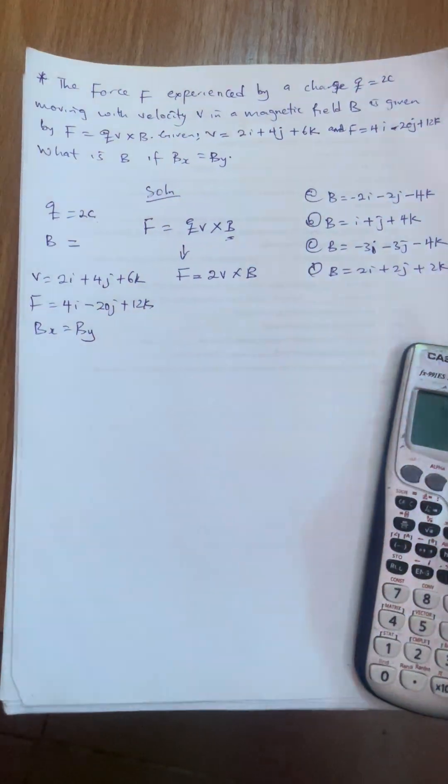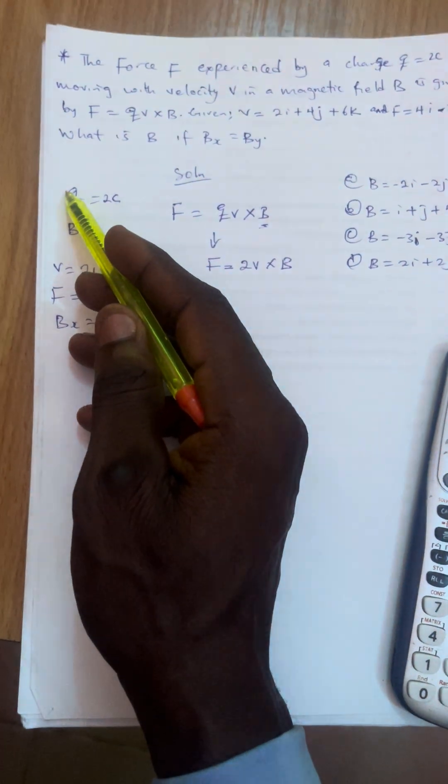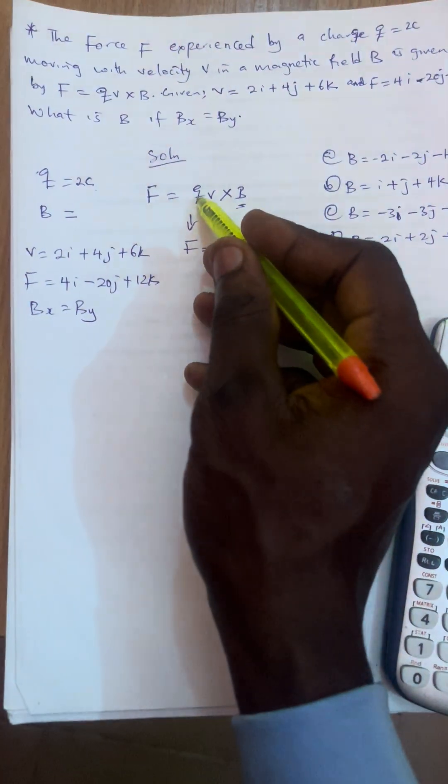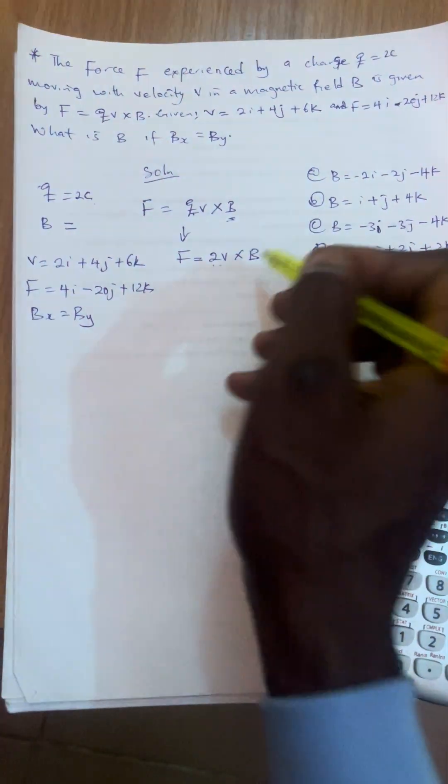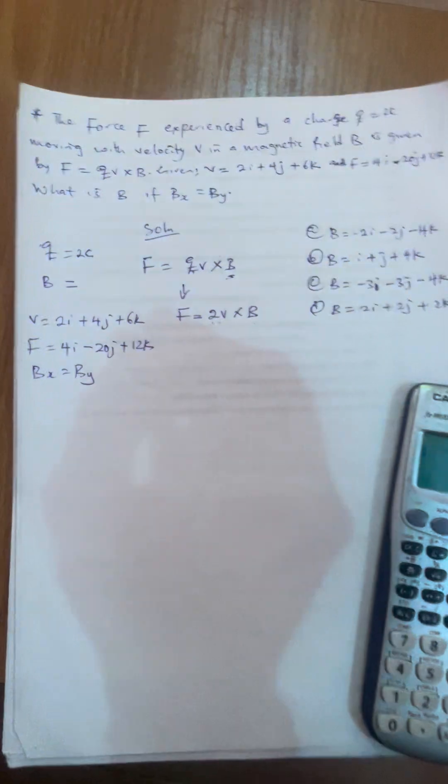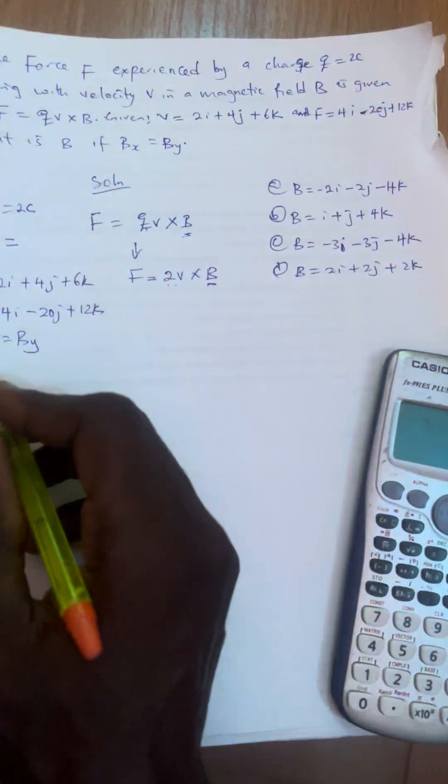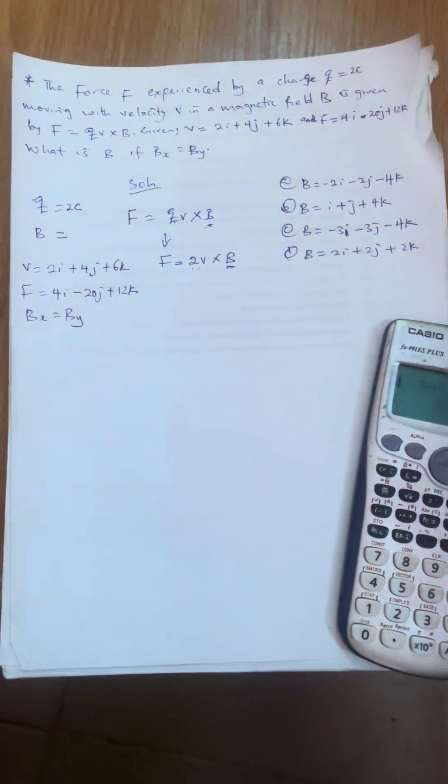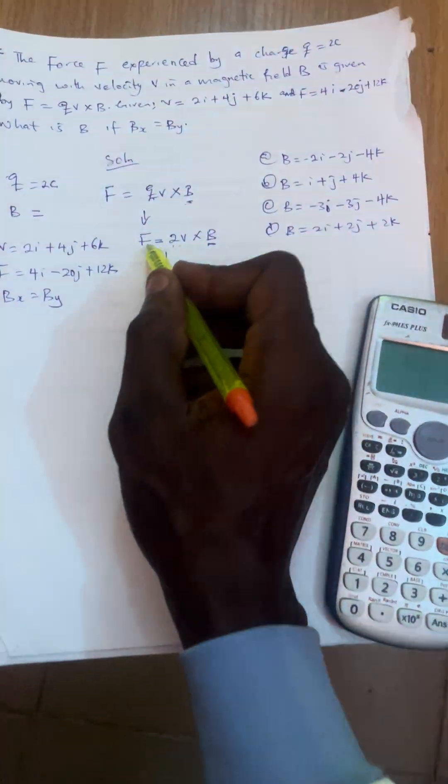This C is the unit of this Q, which means the unit of this charge Q. Q, which is charge, is measured in coulombs. That's why the question is Q, which is charge, is 2C here. So we have F to be equal to 2V. Substitute the value of Q to be 2. Don't forget to have V then cross B. Now the question is we should find this B. But they gave us a condition that if Bx is equal to By. Now this condition will only be used if you are using your hand to solve. But I will make use of this equation.